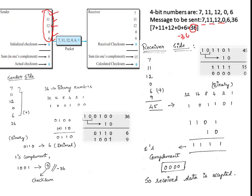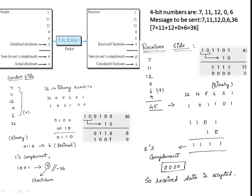The value 9 here is representing minus 36. I will explain how this 9 is calculated — it is the complement representing minus 36. All the original data together with the checksum are transmitted over the channel. At the receiver side, all received data are added together, and if the result is 0, we conclude the received information has no error. Any other numerical value indicates an error.